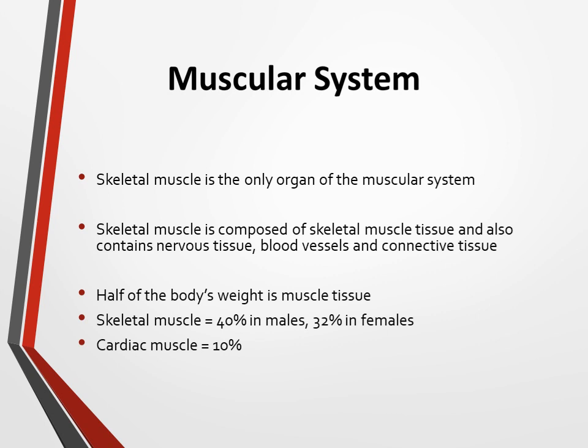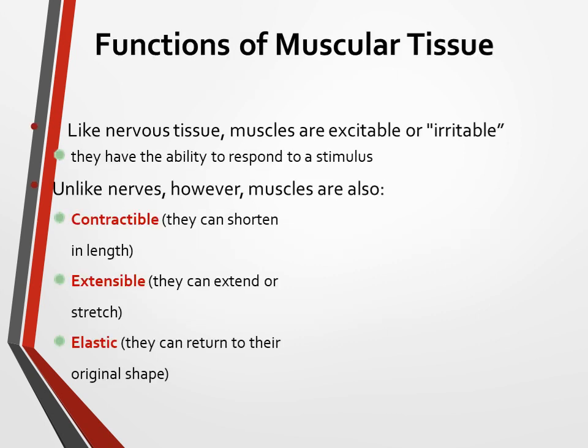Cardiac muscles consist of about 10% of body weight. The functions of muscular tissues: like nervous tissue, muscles are excitable and irritable — they have the ability to respond to a stimulus. Unlike nerves, muscles are also contractile; they can shorten and lengthen. They are extensible — they can extend or stretch — and elastic — they can return to their original shape.